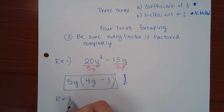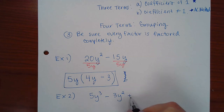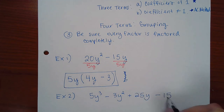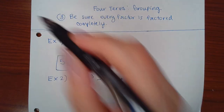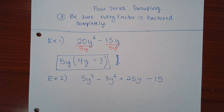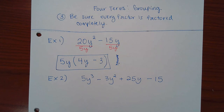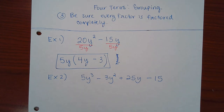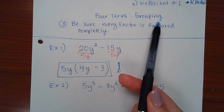For the second example, we have 5y³ − 3y² + 25y − 15. First, check for a GCF: there's no number that divides evenly into 5, 3, 25, and 15, and not all terms share a y. So there is no GCF. Moving to step two, we have four terms, which means we apply the grouping technique.